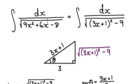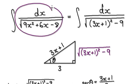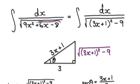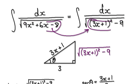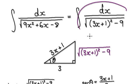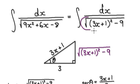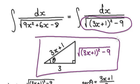So in order to integrate this thing here, you should complete the square on this bit here. Completing the square would then give you this. And then once you've got this here, your eyes should zoom into this bit here.